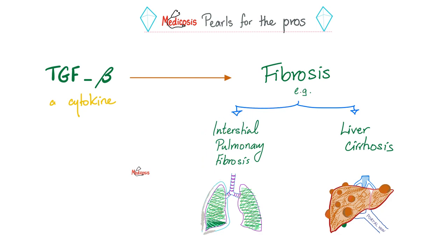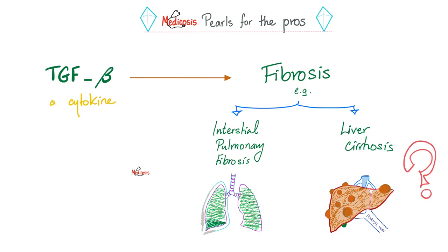In the lung, TGF-beta-driven fibrosis is called interstitial pulmonary fibrosis, which causes restrictive lung disease - go check the pulmonology playlist. Or it can lead to liver cirrhosis in the liver. Here's a question for you: why do male patients with liver cirrhosis experience gynecomastia? Let me know the answer in the comment section.